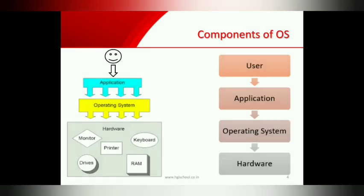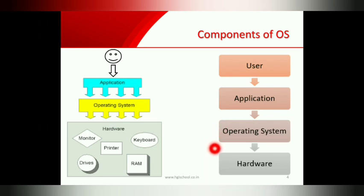These are all components of the operating system. First, users use the software installed on the operating system, and the software can be installed on the operating system. Then hardware comes, on which the operating system is installed. So we can see that the operating system is an interface between the user and the hardware.